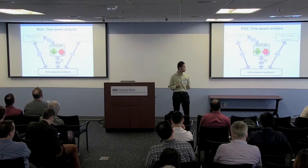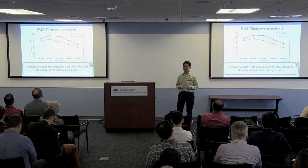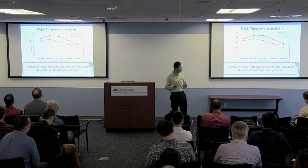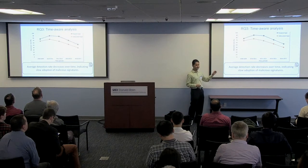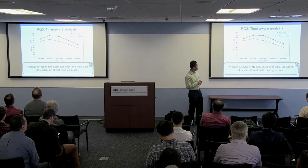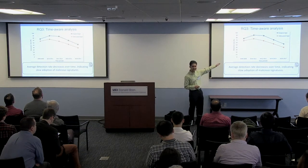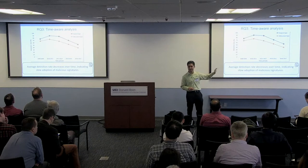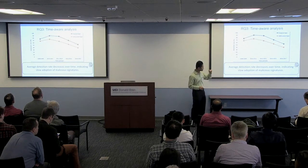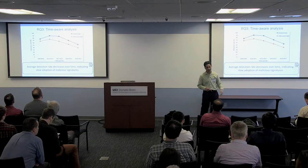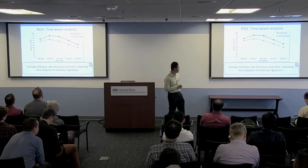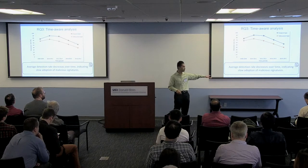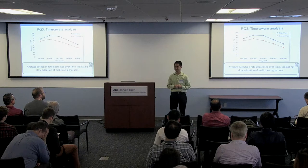For research question three, we look at the relation of time and commercial anti-malware products — specifically the age of apps and how well those products perform over the period 2008 to 2017. The obfuscated apps are detected about 20% less, consistent with earlier findings. But also, over time, all these commercial anti-malware products are getting worse for newer apps — particularly from 2010 through 2017. This shows that commercial anti-malware products are slow to adopt malicious signatures and have a hard time identifying zero-day malware.